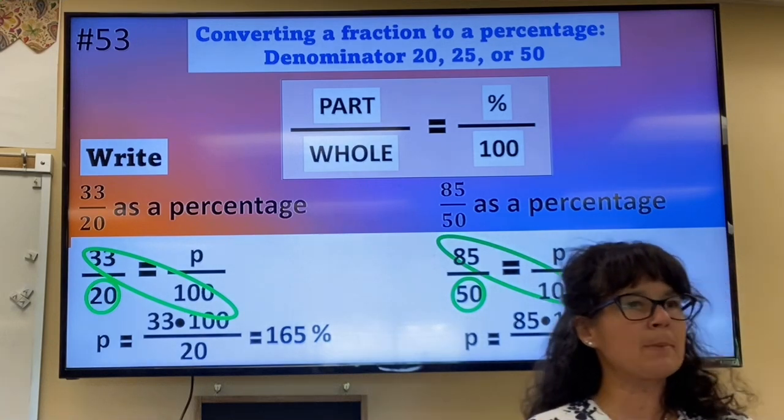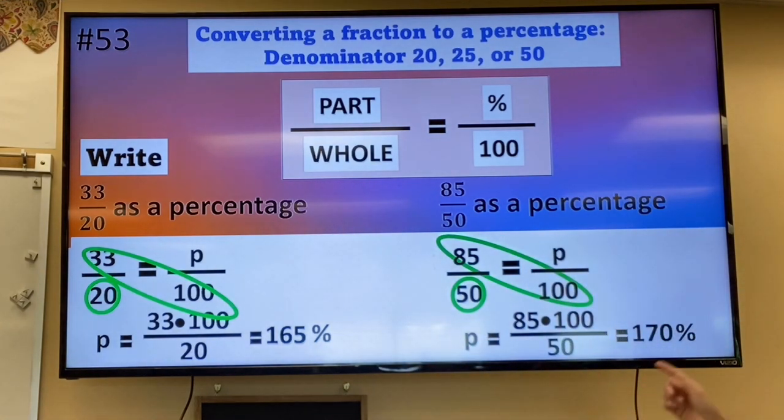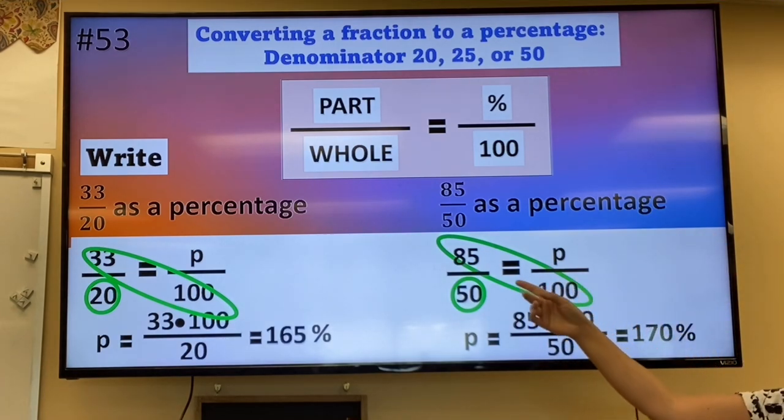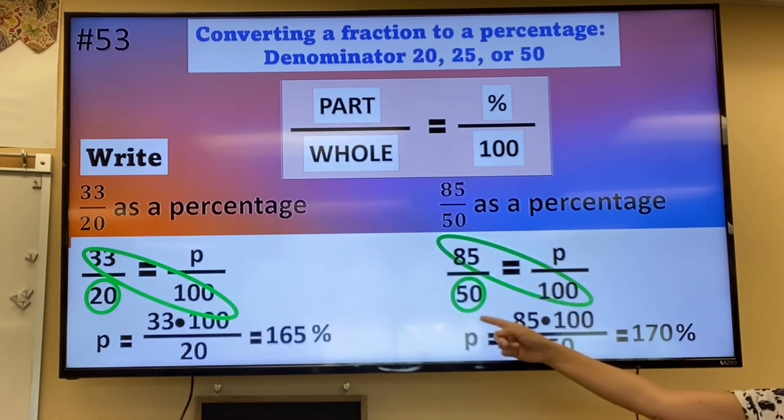This is a percentage. So make sure that you put your percent sign. So we have 170%. Again, hopefully that's a reasonable answer to you. Because if you had 85 out of 50, you have more than 100%.